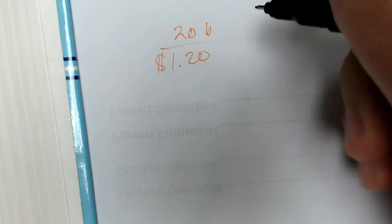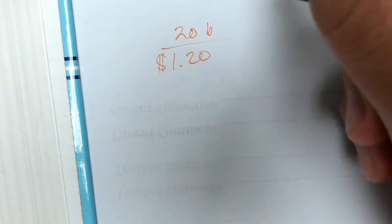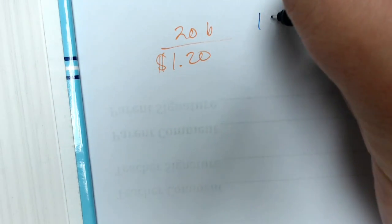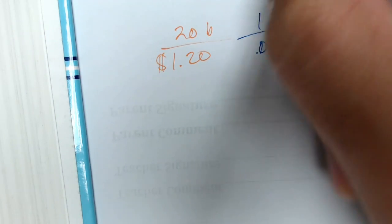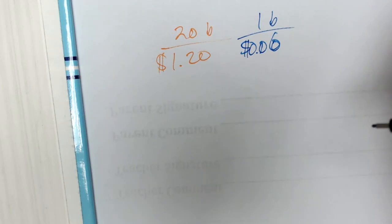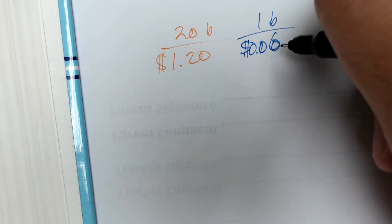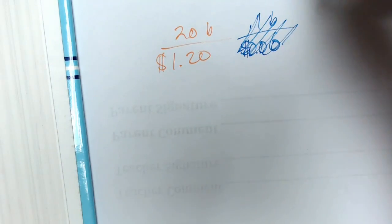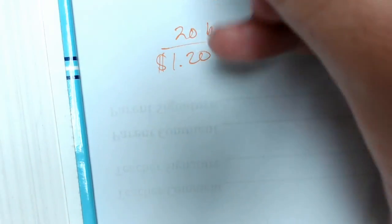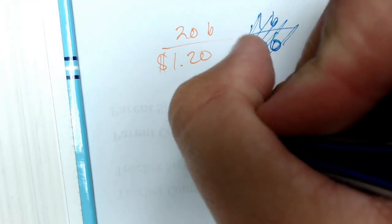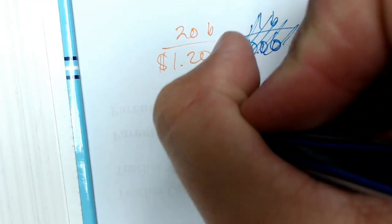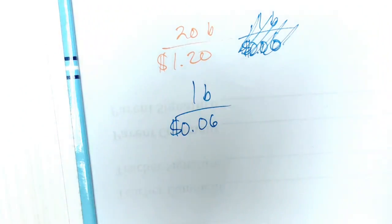So when I take the number of pounds of beans down to one pound of beans, the value will then be at six cents. That's poor writing, I need to do better. So when we divide them both by 20, that becomes one pound of beans over six cents. That's the final answer there we go.